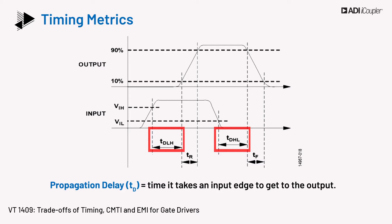Both TDHL and TDLH times could be different for a part, and either of these may be defined as the time between 50% of the final value on the input to 50% of the value on the output. The propagation delay numbers should be low, so the reporting for signaling of overcurrent or error status and subsequent response is fast. This means IGBTs with shorter withstand times can be used in an application, allowing for smaller IGBTs which can save on system space and cost.